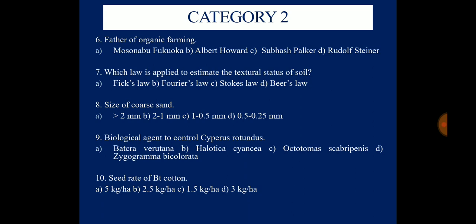Question 8: What is the size of coarse sand? Options are more than 2 mm, 2 to 1 mm, 1 to 0.5 mm, or 0.5 to 0.25 mm. Question 9: What is the biological agent to control Cyperus rotundus? Options are Bactra verutana, Altica cyanea, Acotomus scaripenis, and Zygogramma bicolorata. Question 10: What is the seed rate of BT cotton? Options are 5 kg/ha, 2.5 kg/ha, 1.5 kg/ha, or 3 kg/ha. This was the Average category.